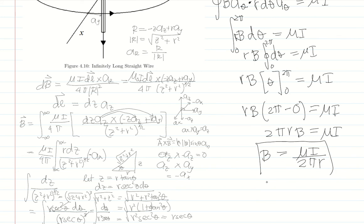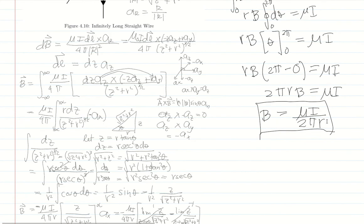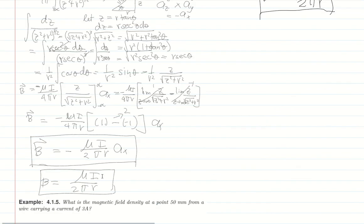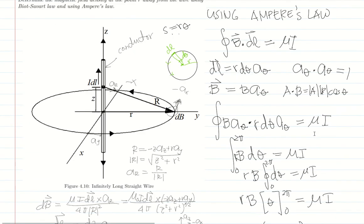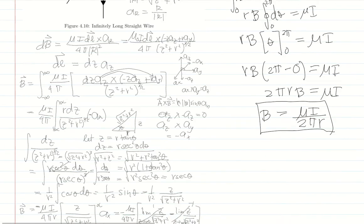Solving for B: B equals mu times I all over 2 pi R, in the a-theta direction. This is the same result we derived using Biot-Savart law. Conclusion: we can use both methods. However, Ampere's law is more limited compared to Biot-Savart law because of the specific magnetic path that must be chosen. Biot-Savart law starts from fundamental concepts and is more general.